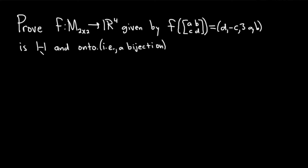Another word for 1 to 1 is injection, and another word for onto is surjection. Whenever you have a function that is an injection and a surjection, it's also called a bijection. We're going to review all the definitions in this video, so if you've never seen these definitions, hopefully you can understand. It's really just all about using the definitions correctly.